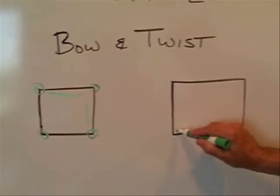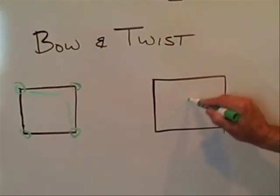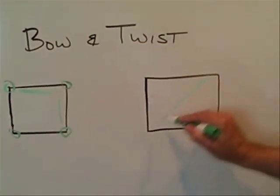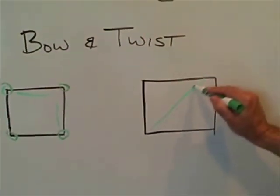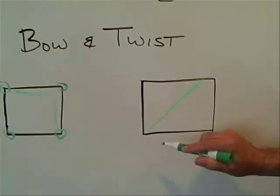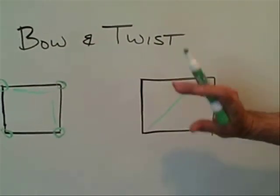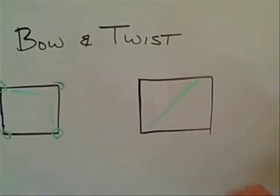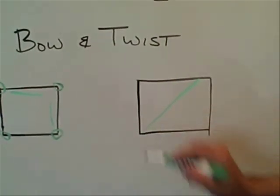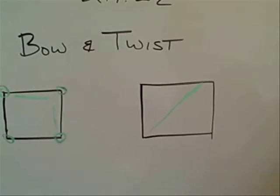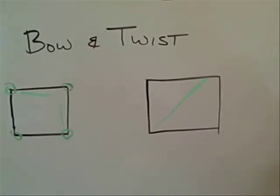On a twisted board, you're looking for deflection or bow in the diagonal direction. So twist is really bow in the diagonal. Let's move over to the table and we can show you some examples.